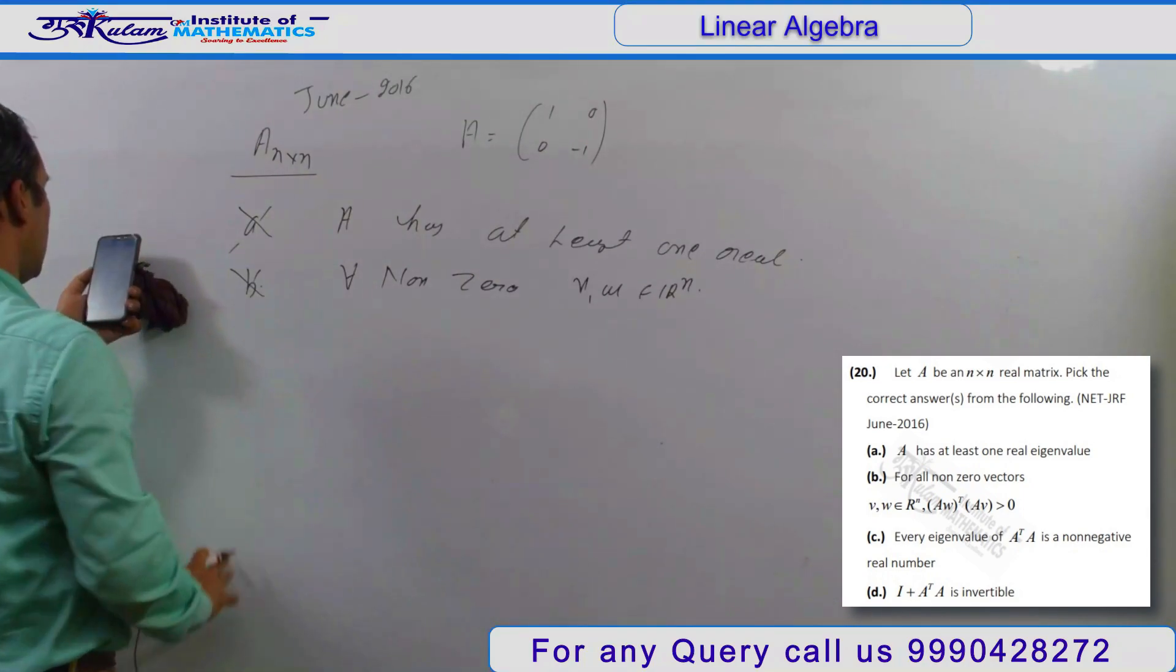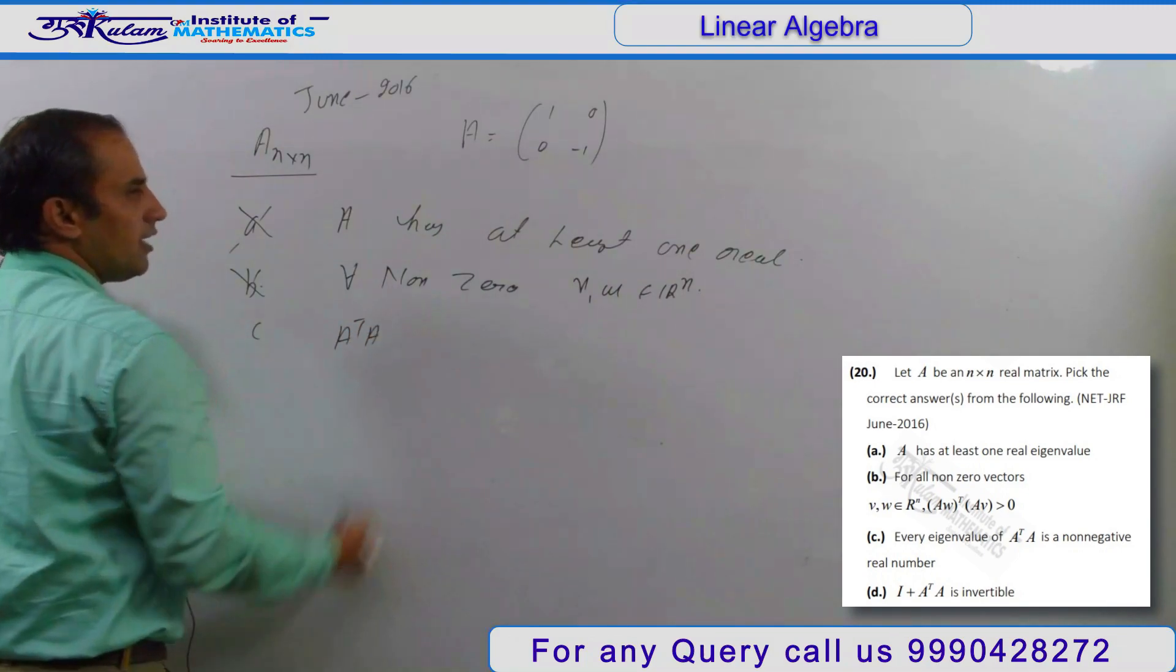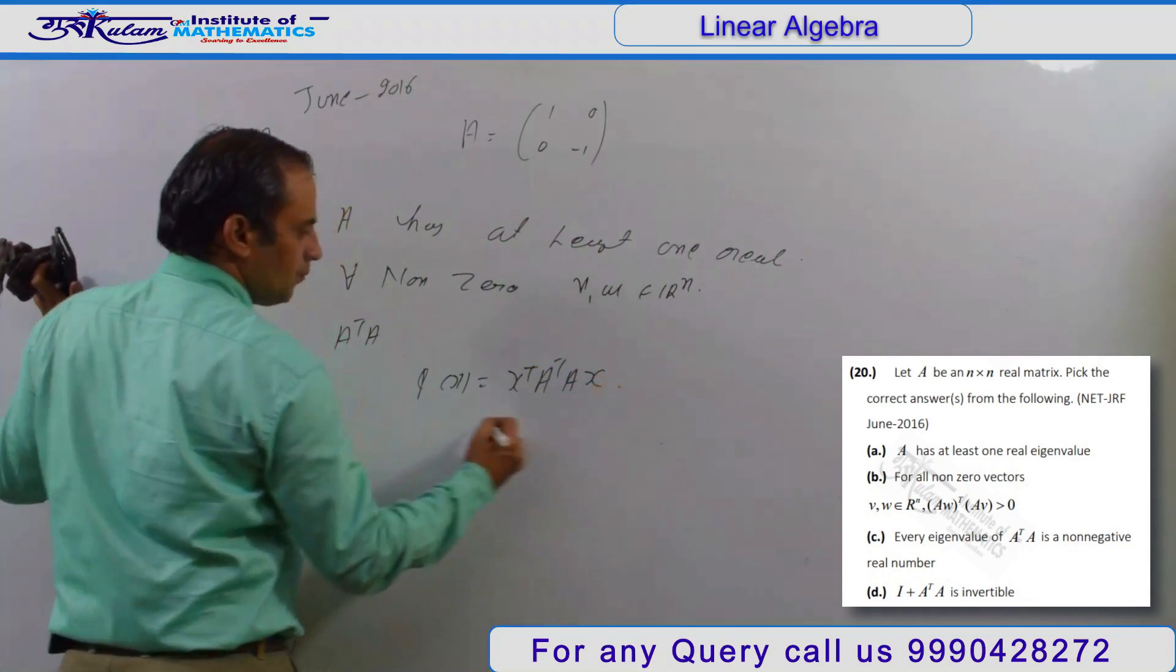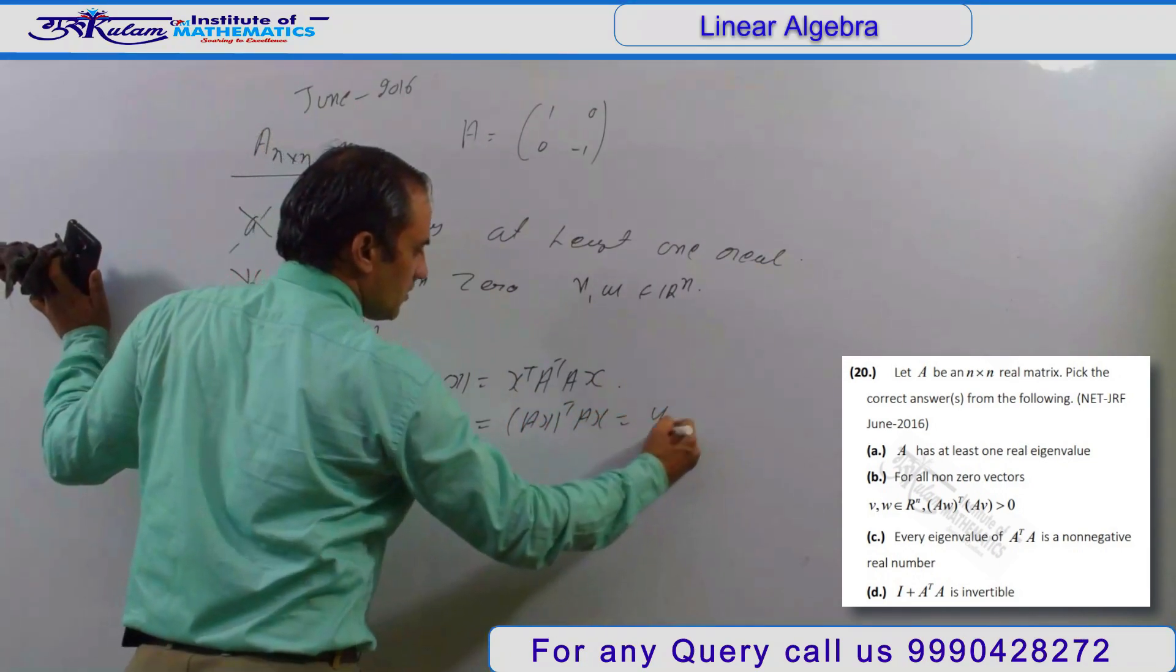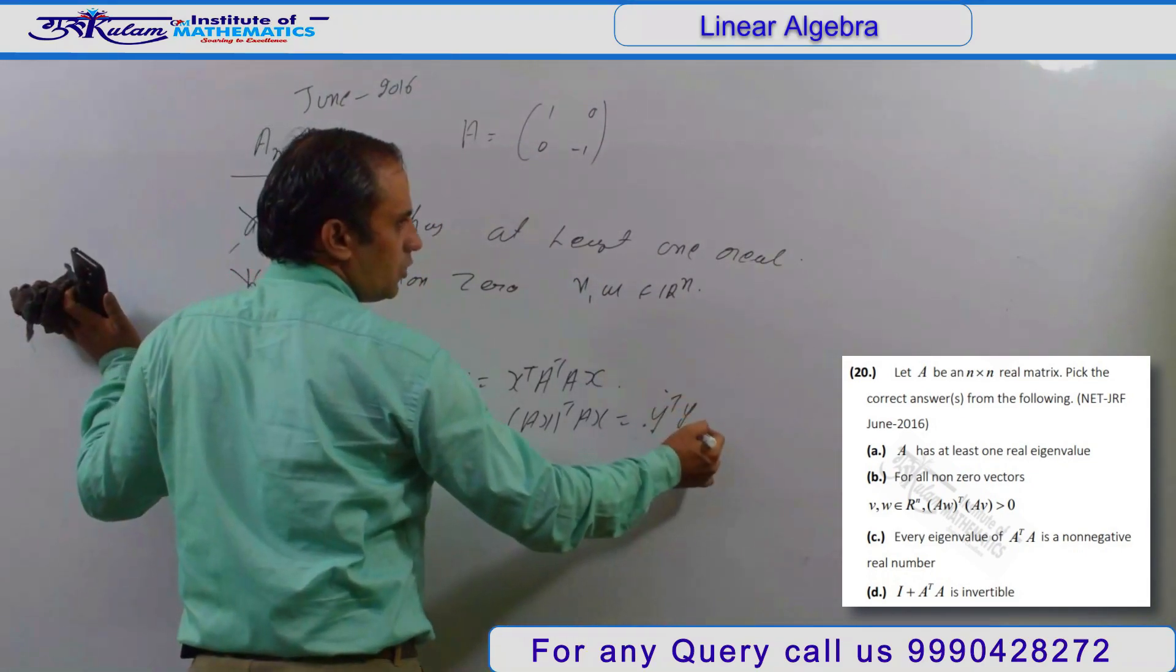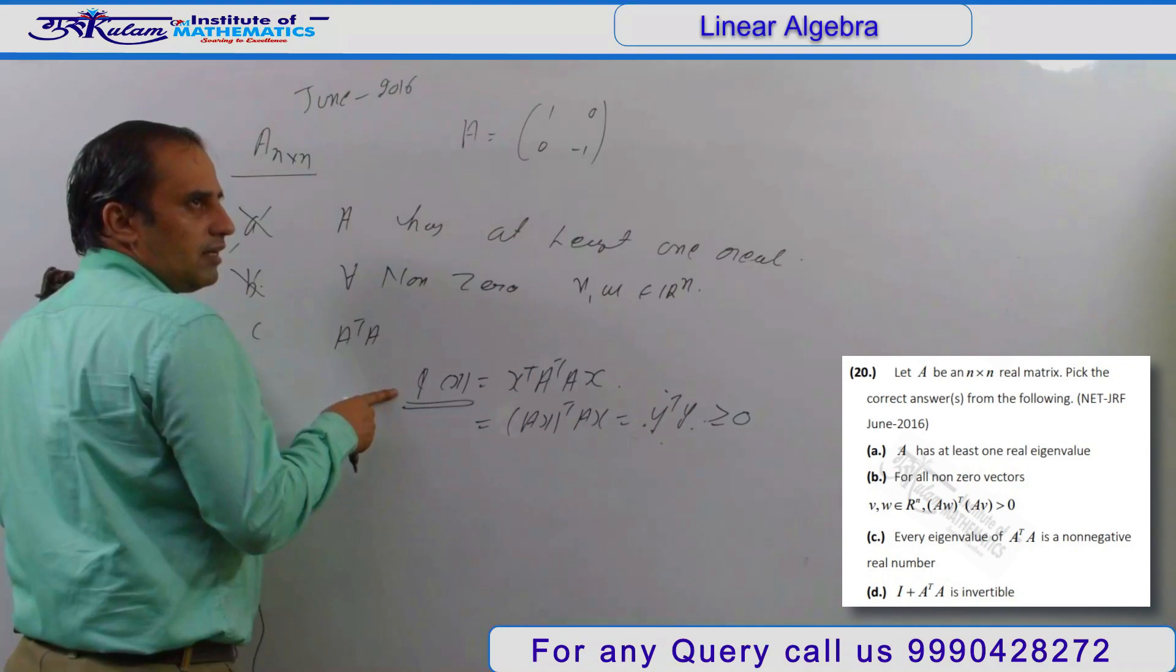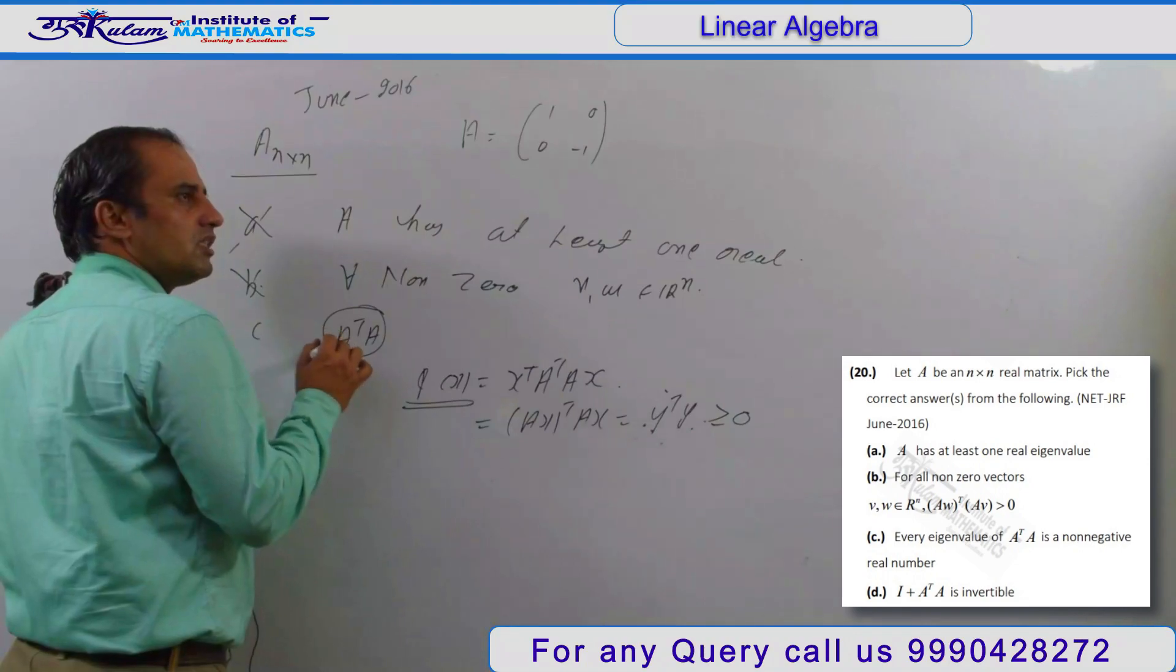Third option asks about every eigenvalue of A transpose A. If I make the quadratic form x transpose A transpose A x, I can write this as (Ax) transpose (Ax), which is something like y transpose y. The dot product of y with itself is always non-negative. So this quadratic form is non-negative definite, and this matrix is symmetric, so all eigenvalues will be non-negative.